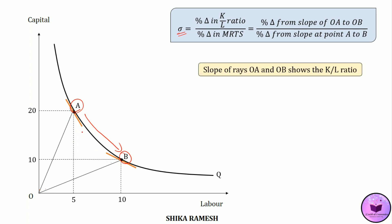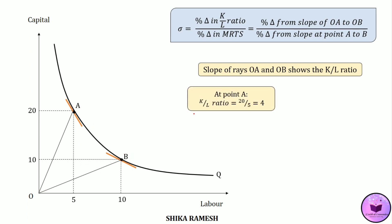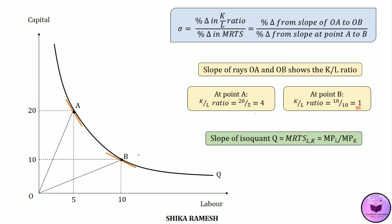The slope of the rays OA and OB represents the capital-labor ratio. At point A, the K/L ratio will be 20 divided by 5, which is 4. And at point B, the K/L ratio will be 10 divided by 10, that is 1. Now we need to find out the MRTS at each of these points. We know that the slope of an isoquant is MRTS of labor for capital, which is equal to MPL divided by MPK.